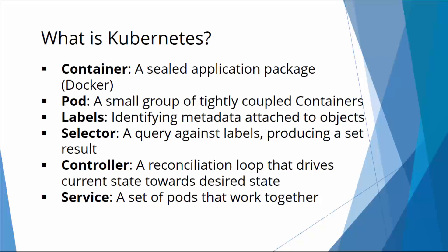A few words on terminology that Kubernetes uses — we'll be working with these terms throughout this course. A container is a sealed application package. A pod is simply a small group of tightly coupled containers, so you take those containers and create a pod. Labels identify metadata attached to objects. A selector is simply a query against these labels, producing a set result. A controller is a reconciliation loop that drives current state towards the desired state — as the word suggests, it controls. And a service is a set of pods that work together.